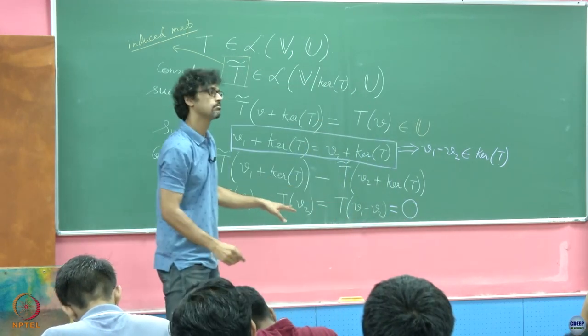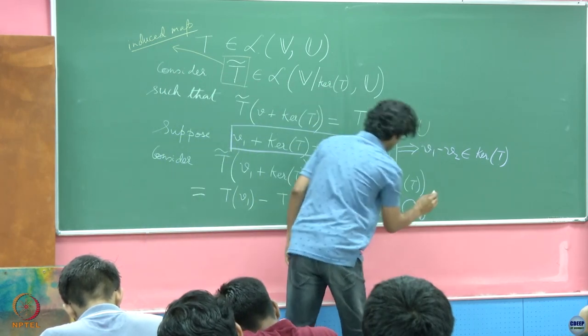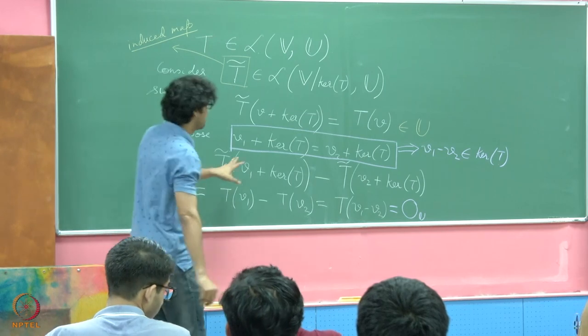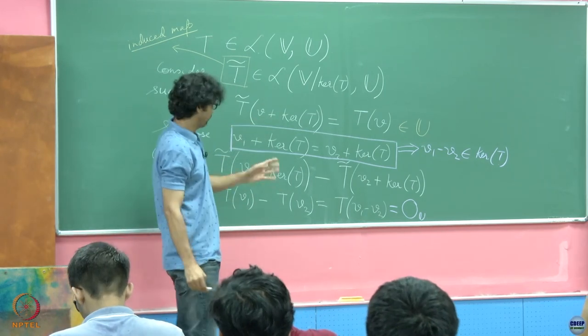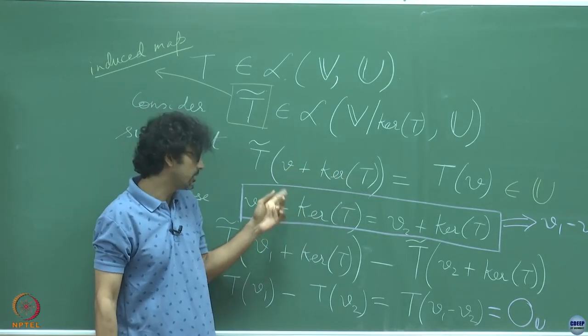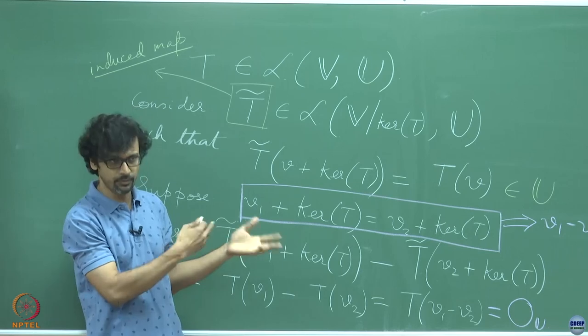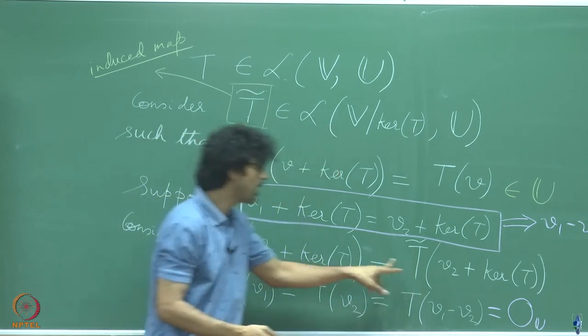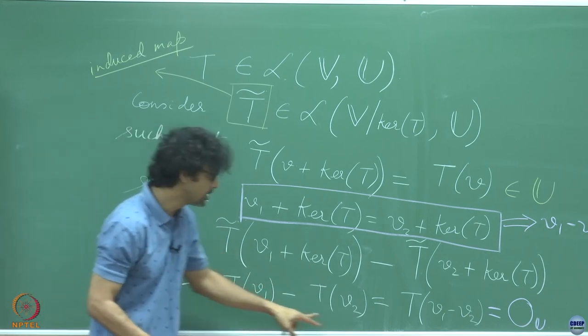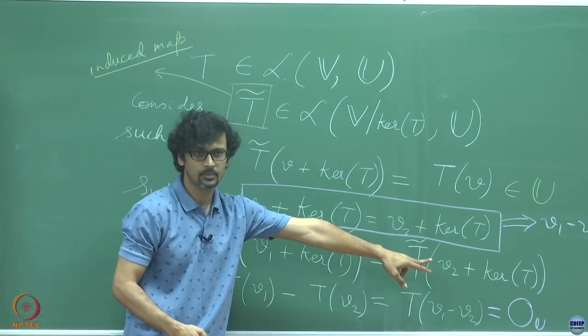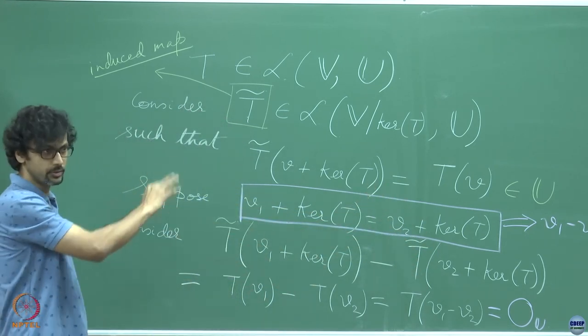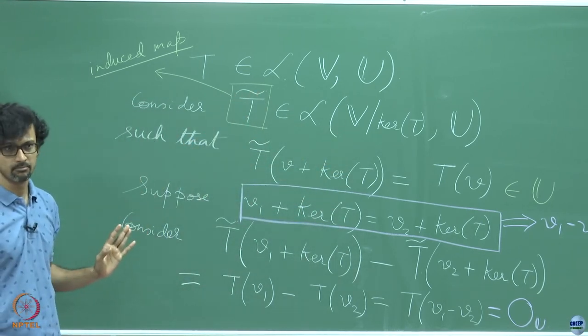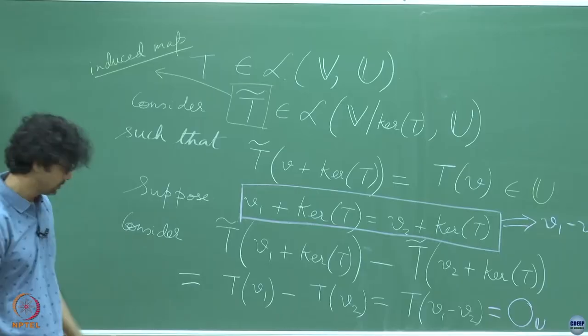So it does make sense, there is no ambiguity, there is no problem with this sort of a definition of the induced map. It does not matter what name you are giving, what you are calling this affine set by whether you are labeling it with V1 or you are tagging it with V2, as long as you are picking out the same affine set, there is no difference in what the induced map does to that affine set. They get mapped to identical points in U. So this is the first sanity check in any of these operations pertaining to these quotient spaces.